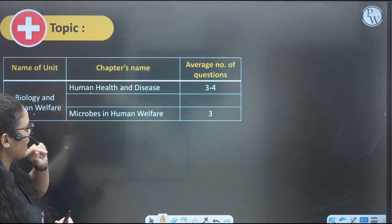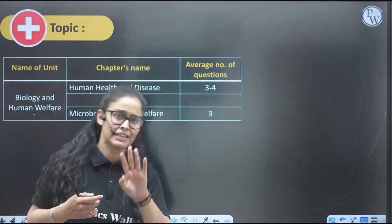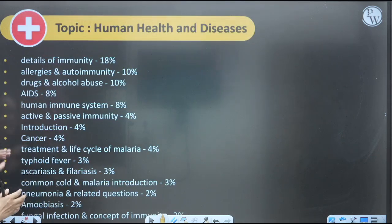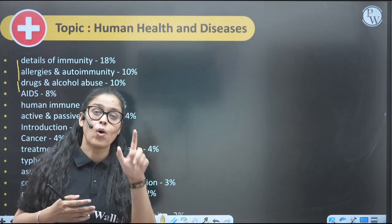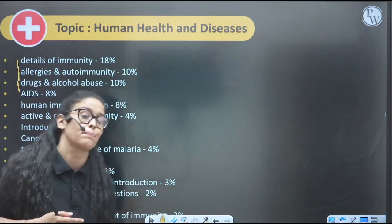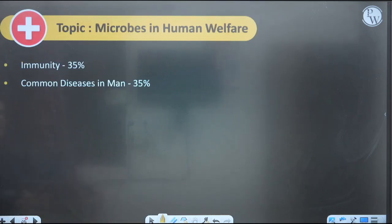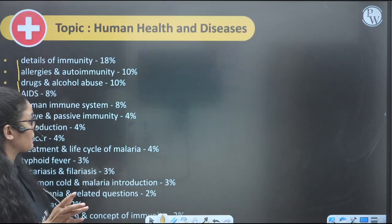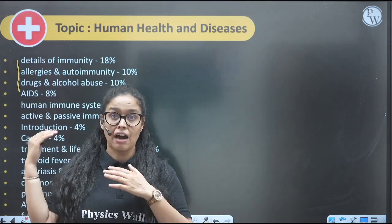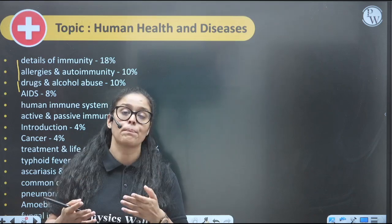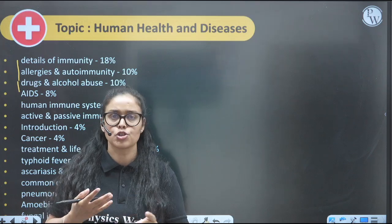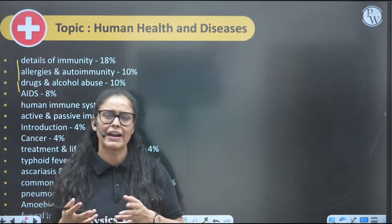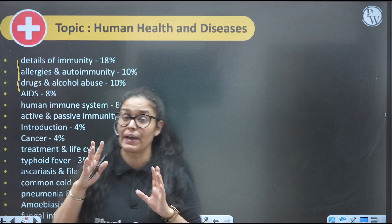Biology and Human Welfare: Human Health and Disease — 3–4 questions; Microbes — 3–4 questions. Maximum questions from health and disease come from immunity, drug abuse, and common diseases. The immunity part is very important, and all common diseases are important — you will find questions from these every year. This is a very detailed analysis of all topics so you can realize which topics to prioritize and which to give less attention.